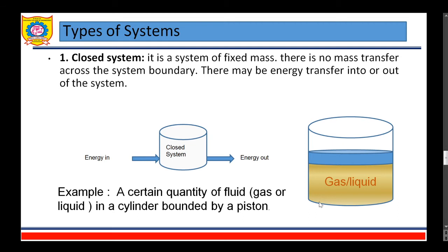We will learn the types of the thermodynamic system. The first type is the closed system. It is a thermodynamic system of fixed mass. There is no mass transfer across the system boundary. There may be energy transfer into or out of the system. So if you consider this as a system, there is no mass interaction or mass exchange between the system and the surrounding, but there may be energy in or energy out — energy exchange is possible in a closed system. For example, a certain quantity of fluid, that could be gas or liquid, in a cylinder bounded by a piston is called a closed system.